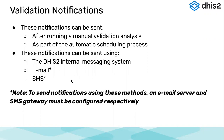These notifications can be sent in three ways. One is you could utilize the DHIS2 internal messaging system. We have a messages app where users can communicate one-to-one or contact an entire user group. Through the messaging app, you could get access to these notifications generated from the validation. Or if you want to share this information outside of DHIS2, you can also send these notifications through email or SMS. The DHIS2 internal messaging system is available by default and does not need any external configuration.